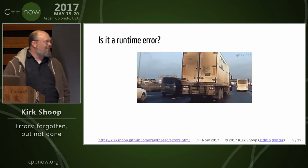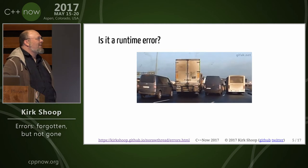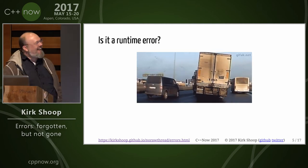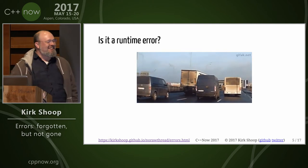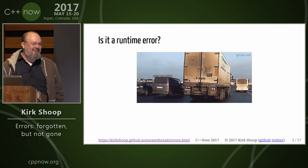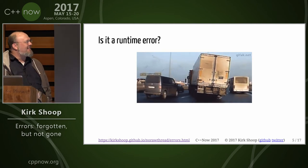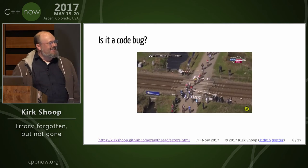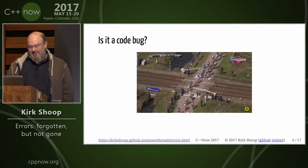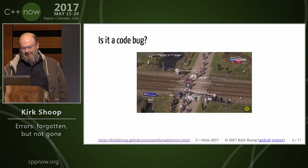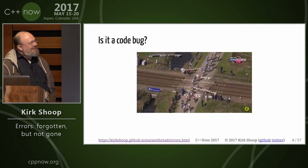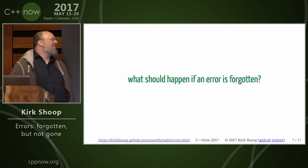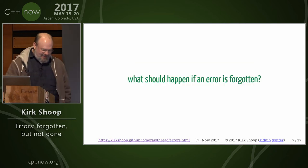So is it a runtime error? Sometimes the system is okay, but still very unexpected things can happen. Or is it a code bug? Sometimes the system is really screwed up — that was not good routing for a bike race. In this particular case, I think it's a code bug.